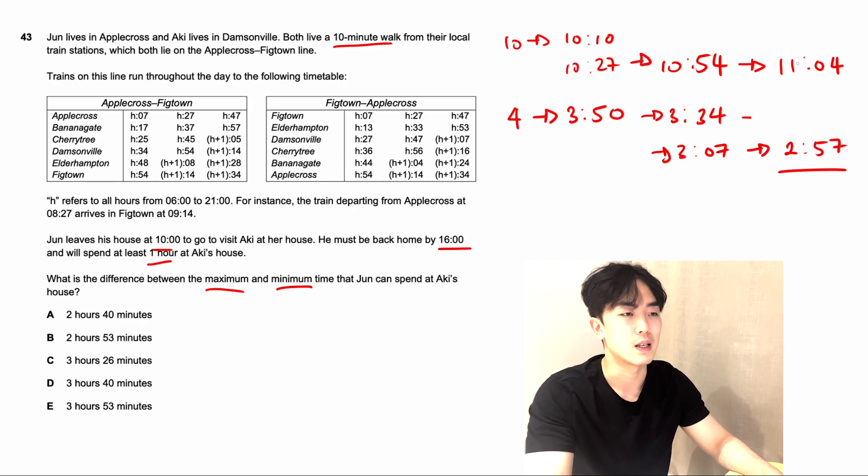So that means he can arrive at 11:04, but he has to leave by 2:57. The amount of time that he can spend at Aki's house will be 3 hours and 53 minutes. This is the maximum amount of time that he can spend at her house.